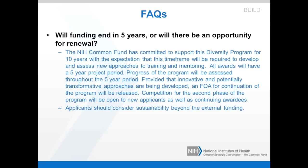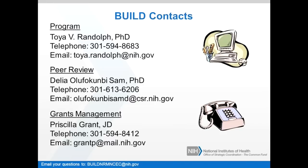Is the $30 million budget for BUILD for each year or for the entire five years? The $30 million budget is for the entire five years. The first year can be up to $3 million in total cost. To clarify, the $30 million allocation will be committed in the first year, and there will be additional allocations in years two through five for the BUILD program as a whole.